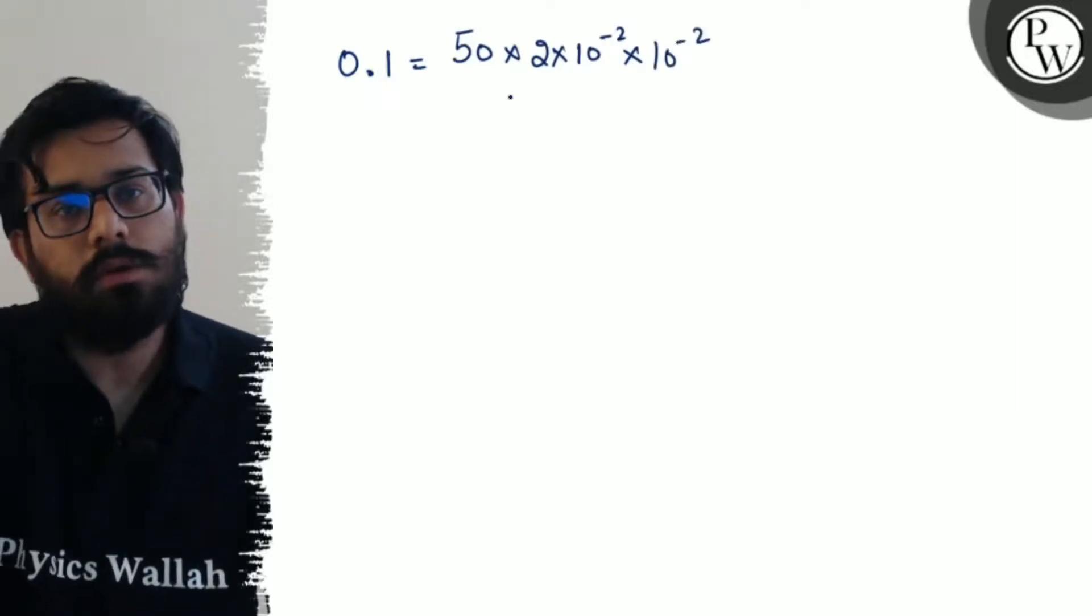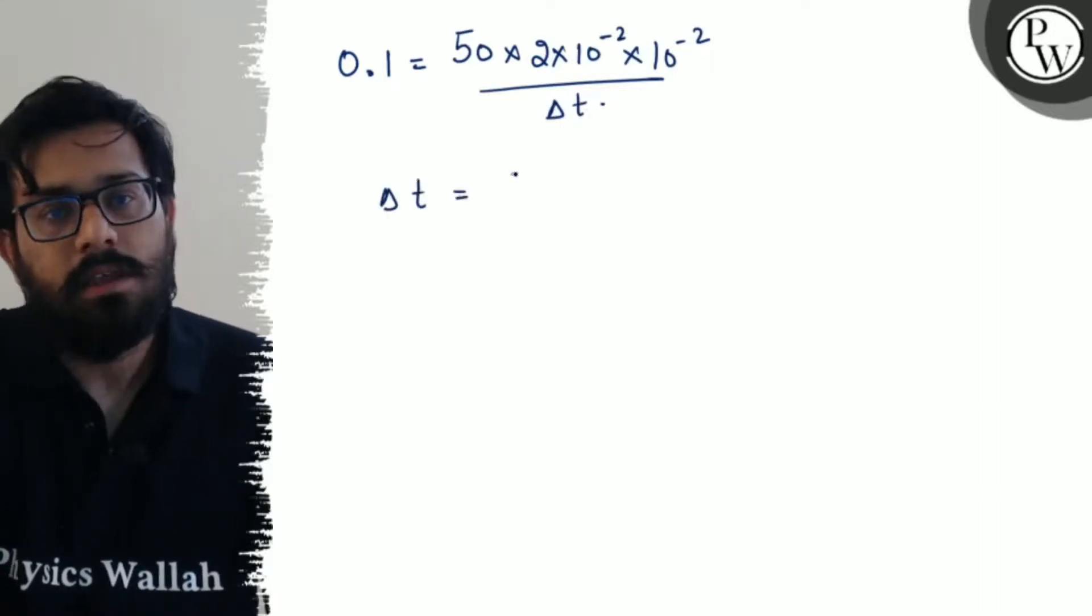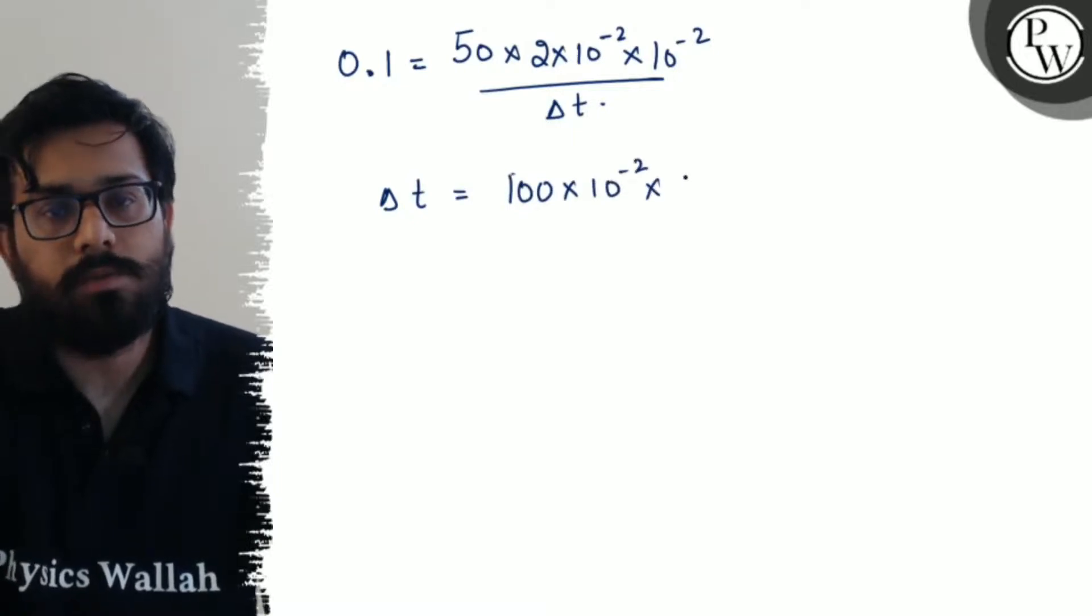So Δt can be written as (50 × 2 × 10^-2 × 10^-2) / 0.1.